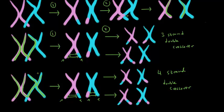Remember, it's not just happening to one pair of homologous chromosomes — it's happening to all of the pairs. So crossing over is a great way to shuffle around alleles and come up with a whole new combination that didn't actually exist before. It's a great way to increase genetic variability.